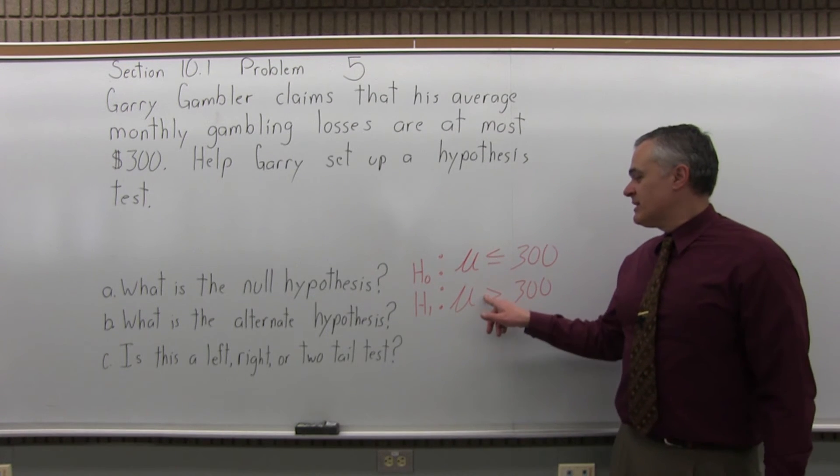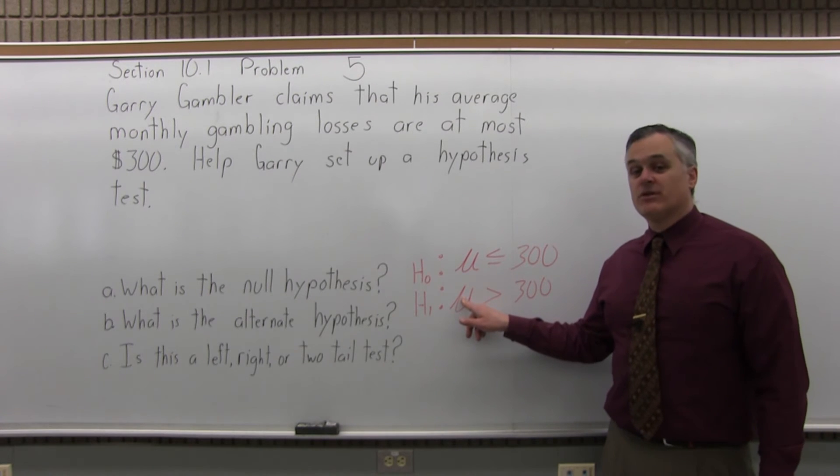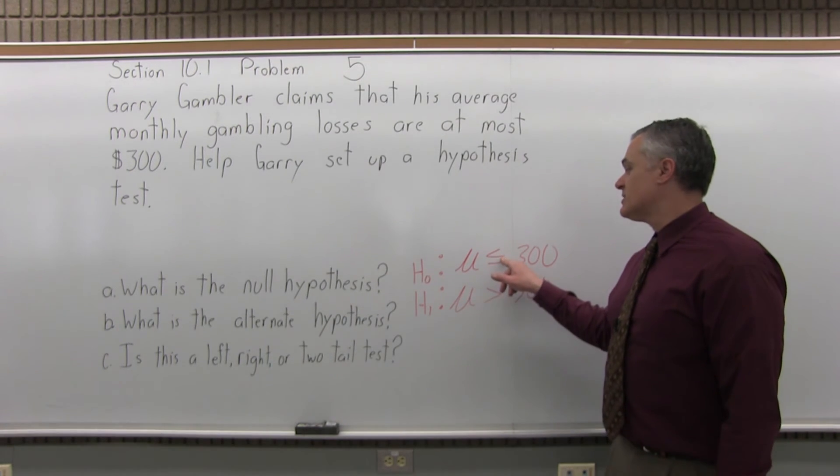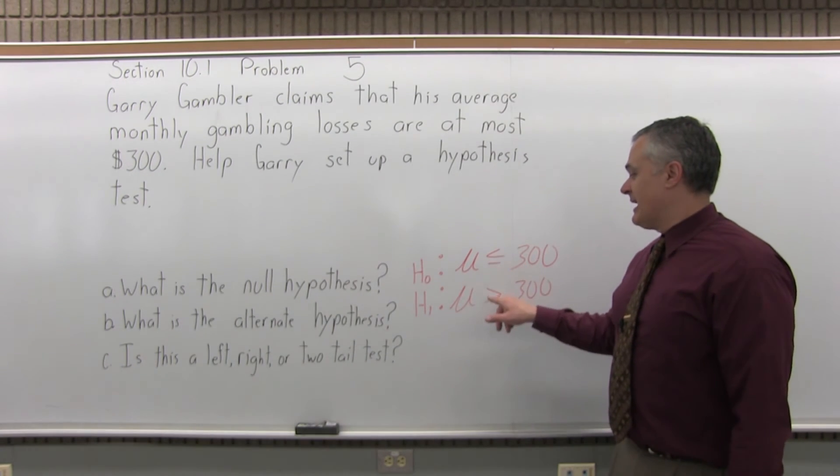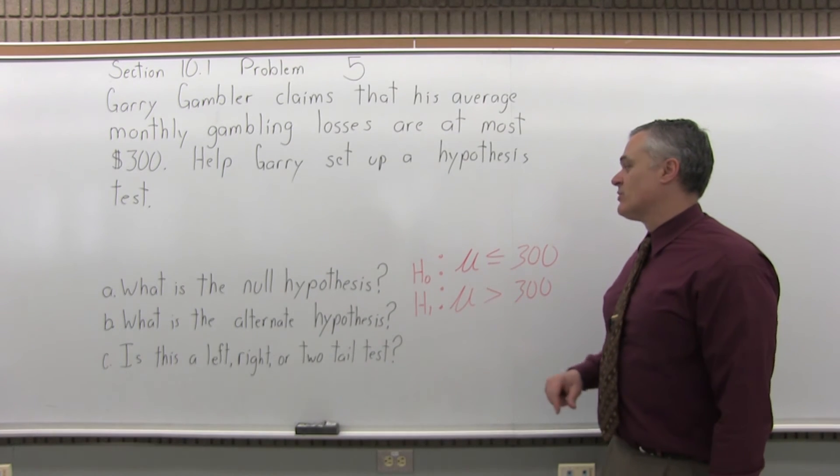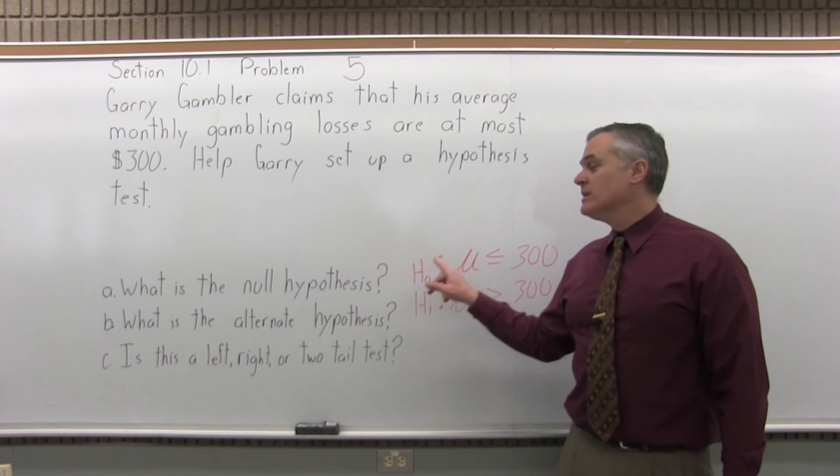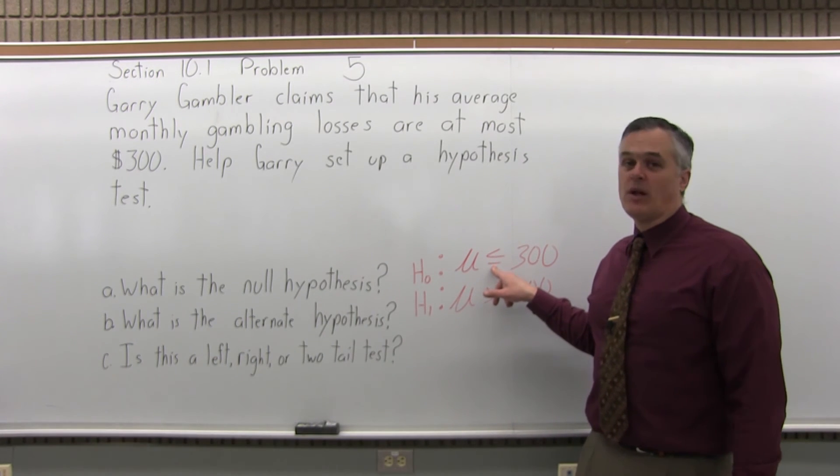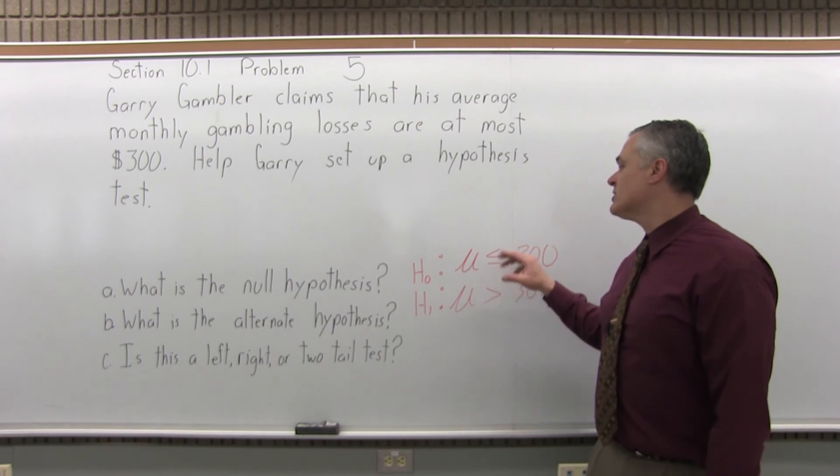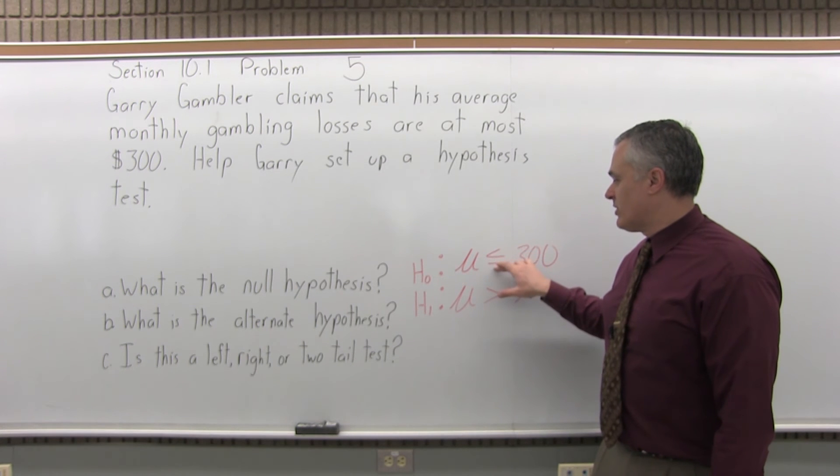So it would be that the real average is greater than 300. Gary claims that it's 300 or less, and the alternate would be the opposite, that it's greater than 300. Again, the null hypothesis, the H sub 0, always contains the condition of equality, whether it's just regular equals or an inequality with an or equal to.